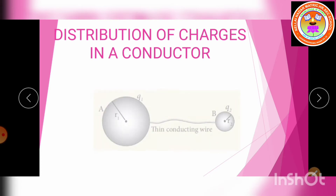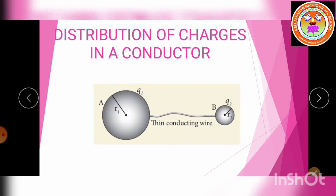Let us consider two conducting spheres A and B, with sphere A having radius R1 and sphere B having radius R2. These two spheres are connected by using a thin connecting wire.